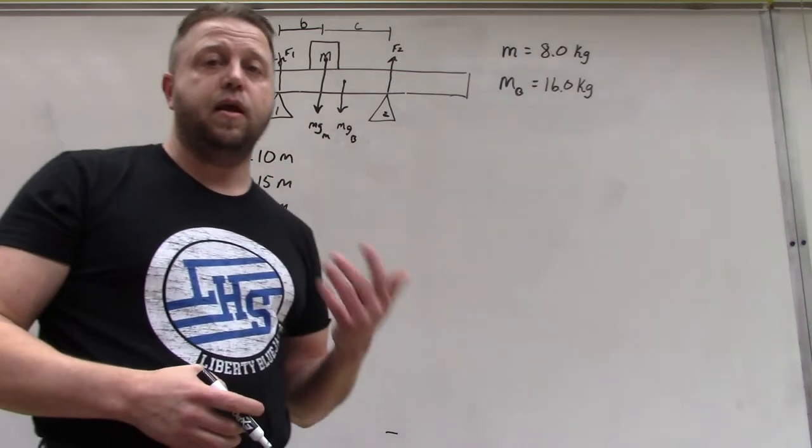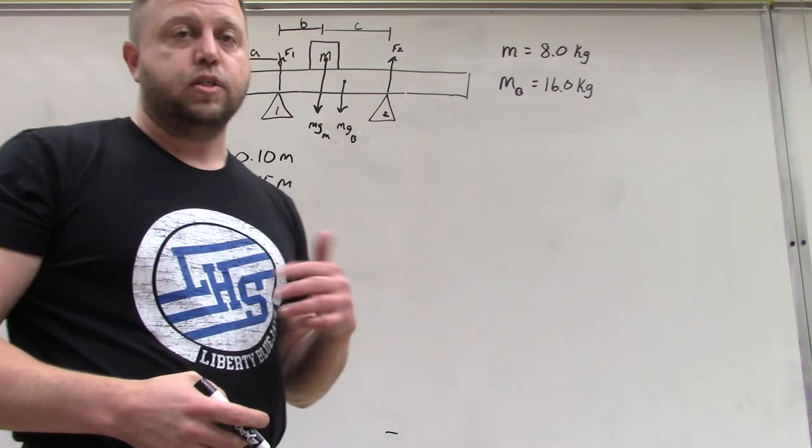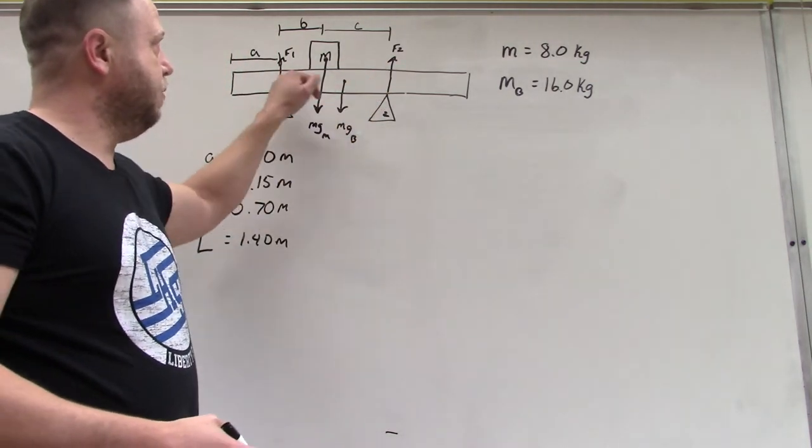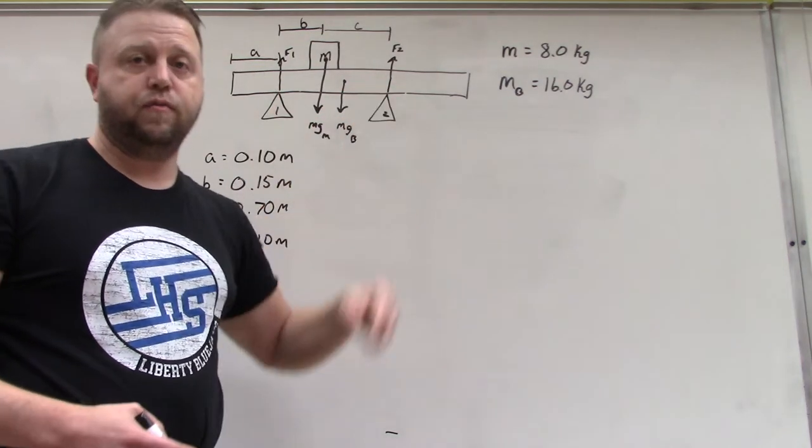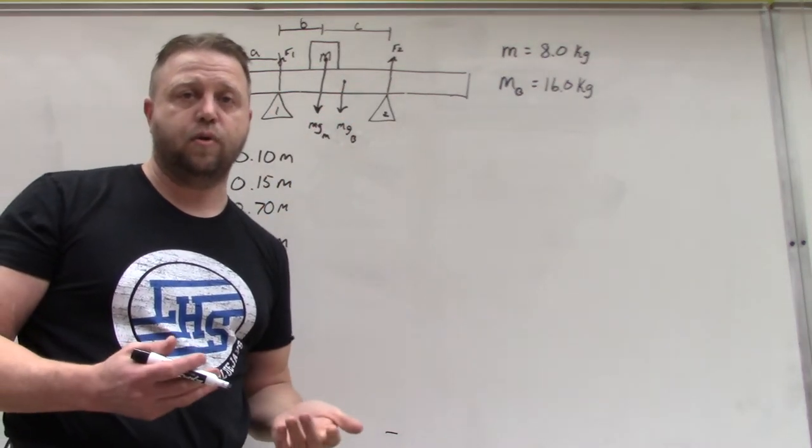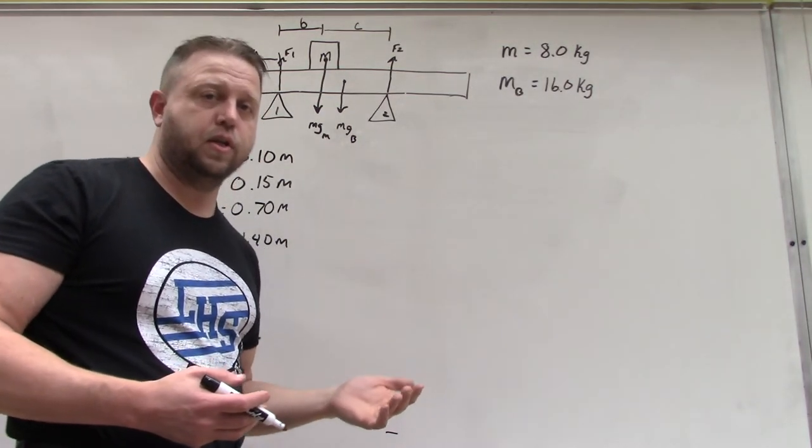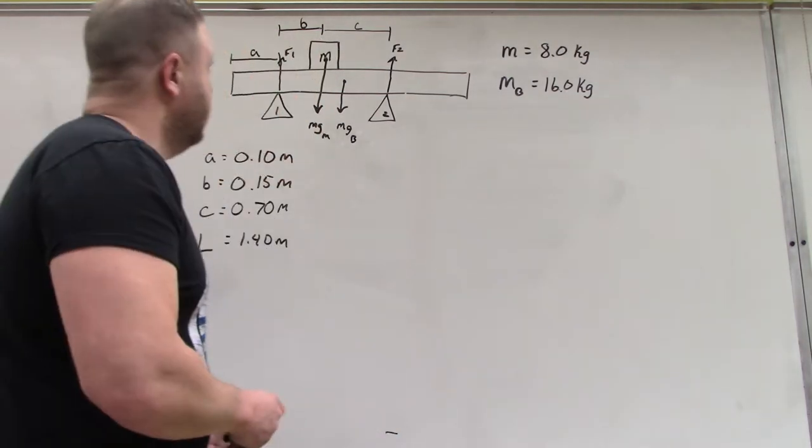The way we do that is to write a torque equation and make one of the two forces our rotational axis. Since the problem is telling us to solve for F2, and it really doesn't matter which one we pick, but it's going to be easier based on the distance measurements given. Since we're solving for F2, what we're going to do here is eliminate F1. We'll make this our rotational axis.